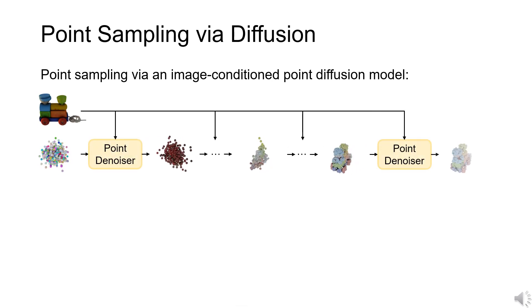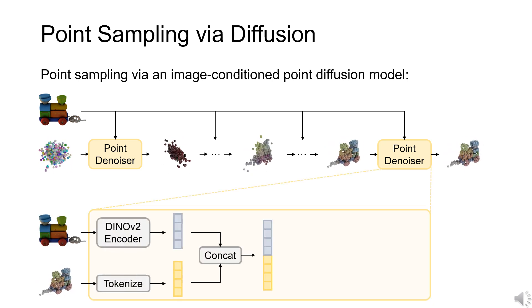The core of our point sampling stage is an image-conditioned point diffusion model, which generates point clouds iteratively using a point denoiser. In each denoising step, the point denoiser takes the image and the noisy point cloud as input.